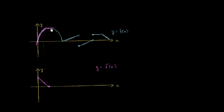Then the slope is getting more and more negative. At this point, it seems like the slope is just as negative as it was positive over there. So it seems like this would be a reasonable view of the slope of the tangent line over this interval.